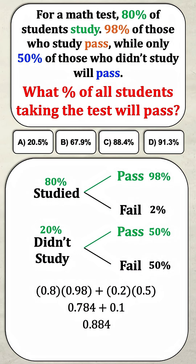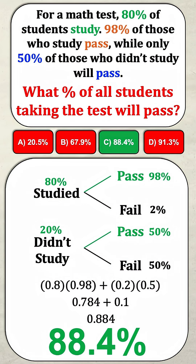Adding them together gives 0.884, which is answer C — 88.4%. Did you get this one right? Let me know in the comments.